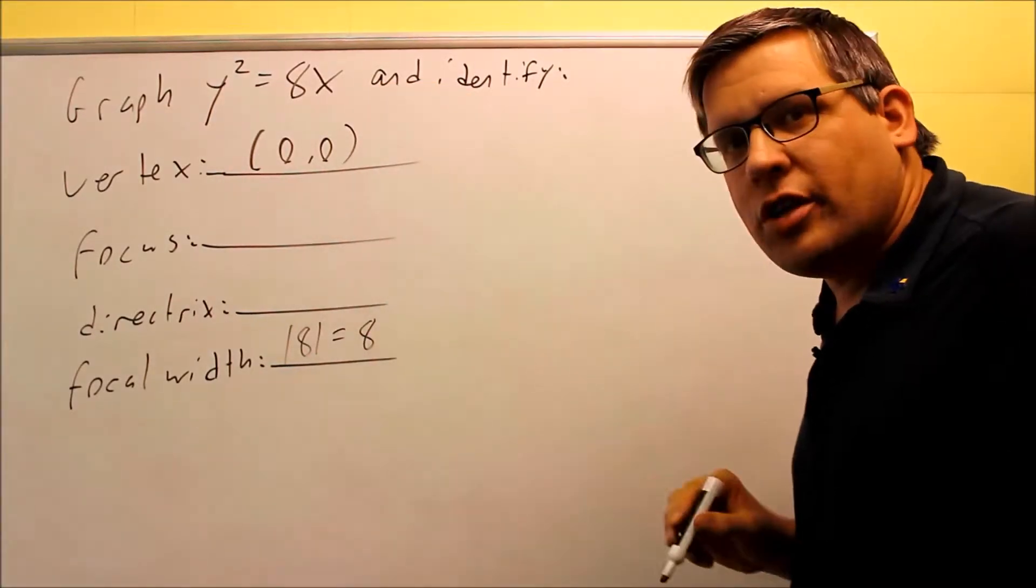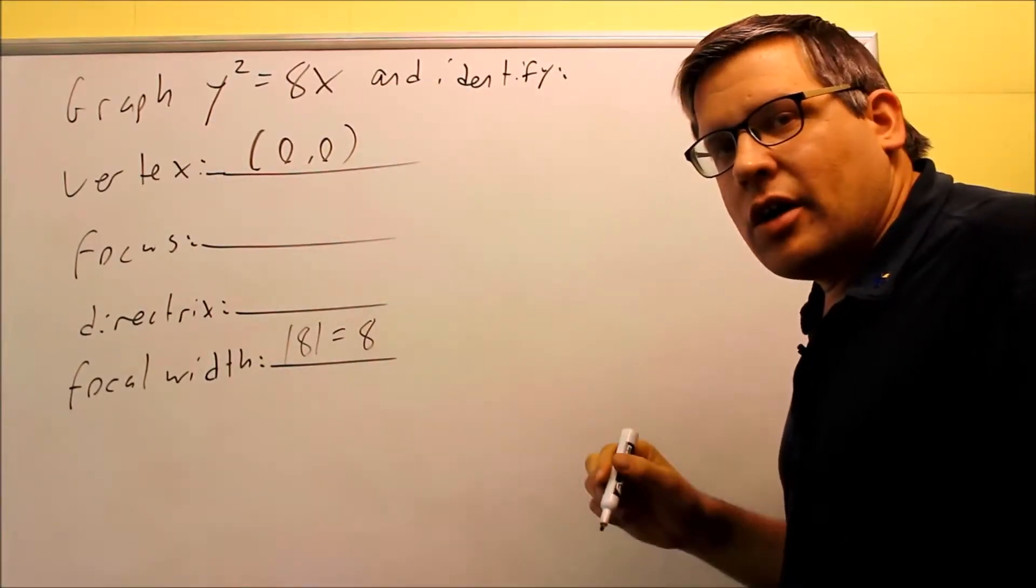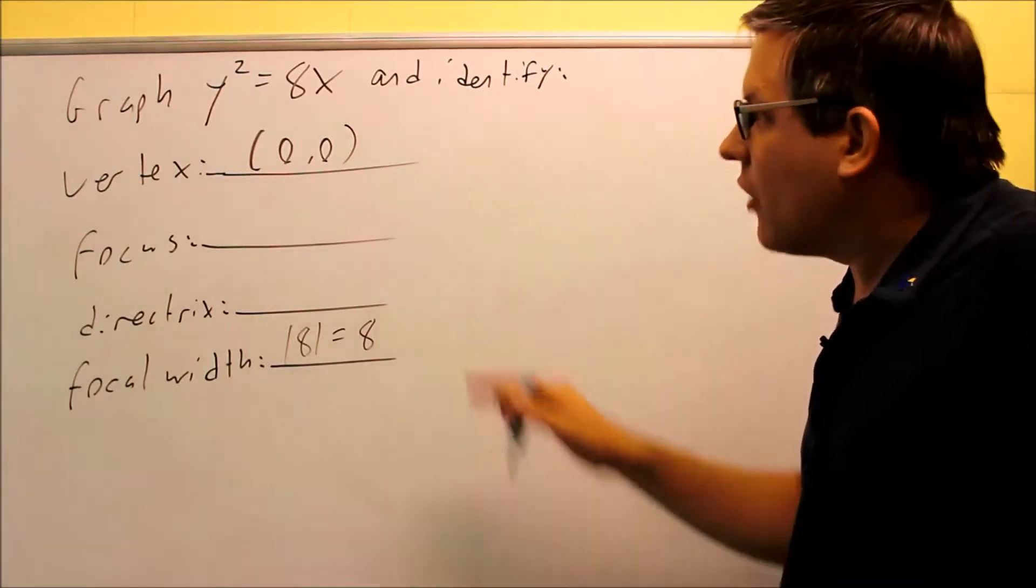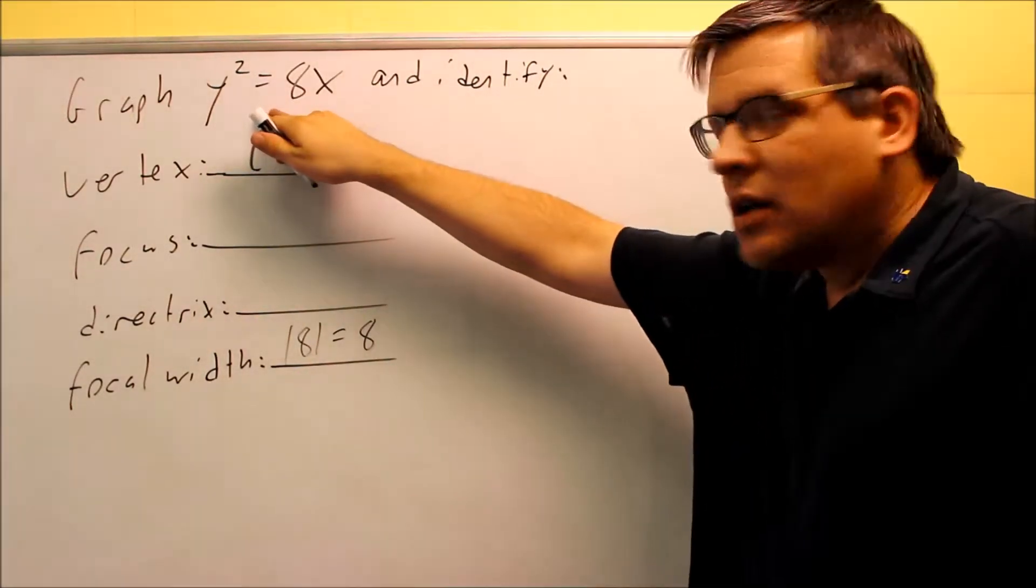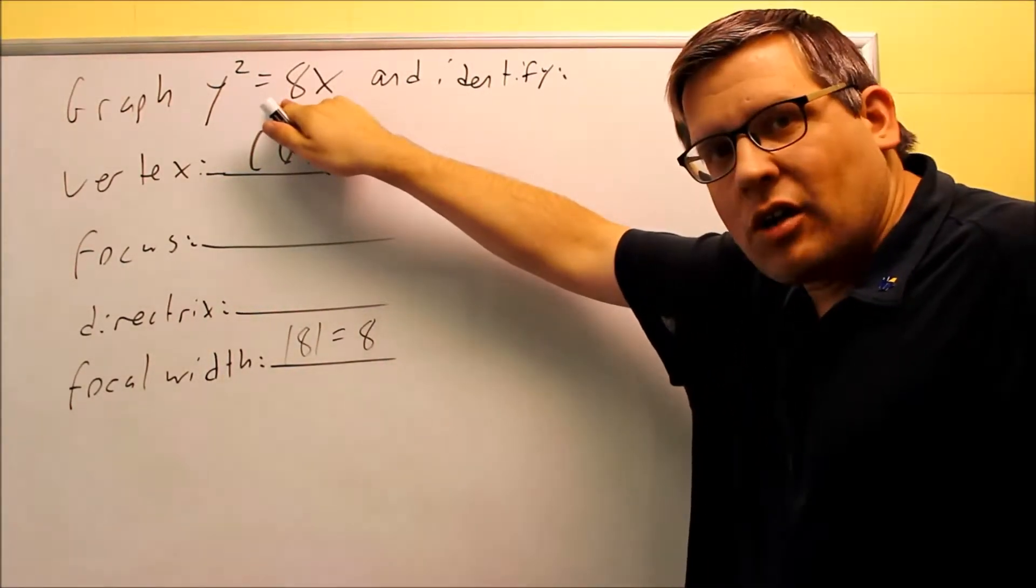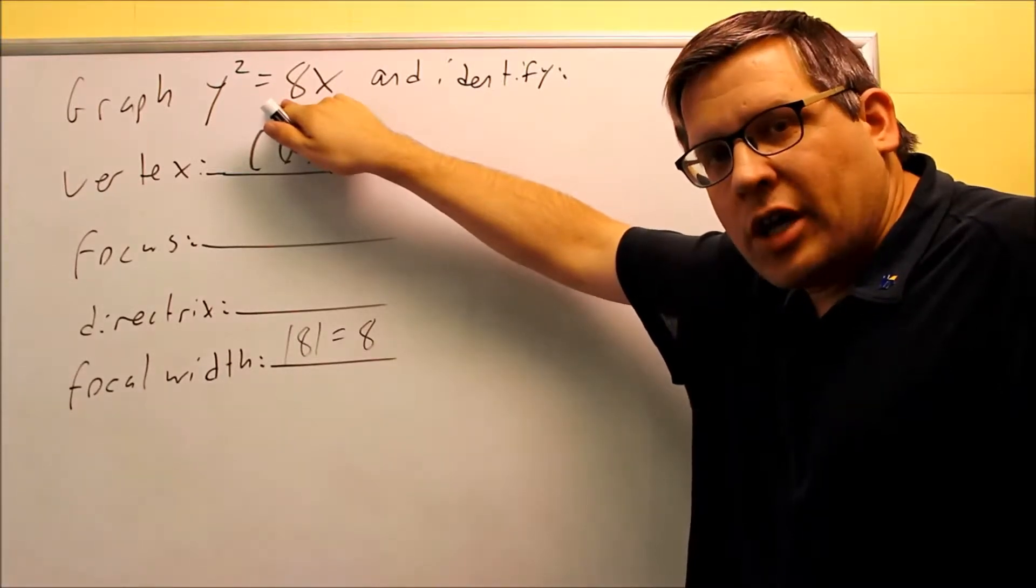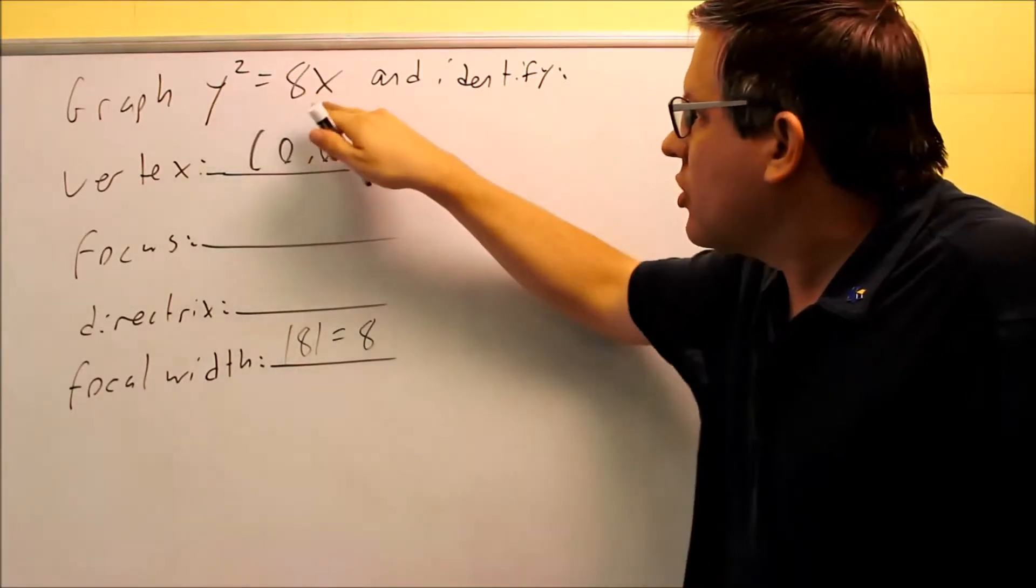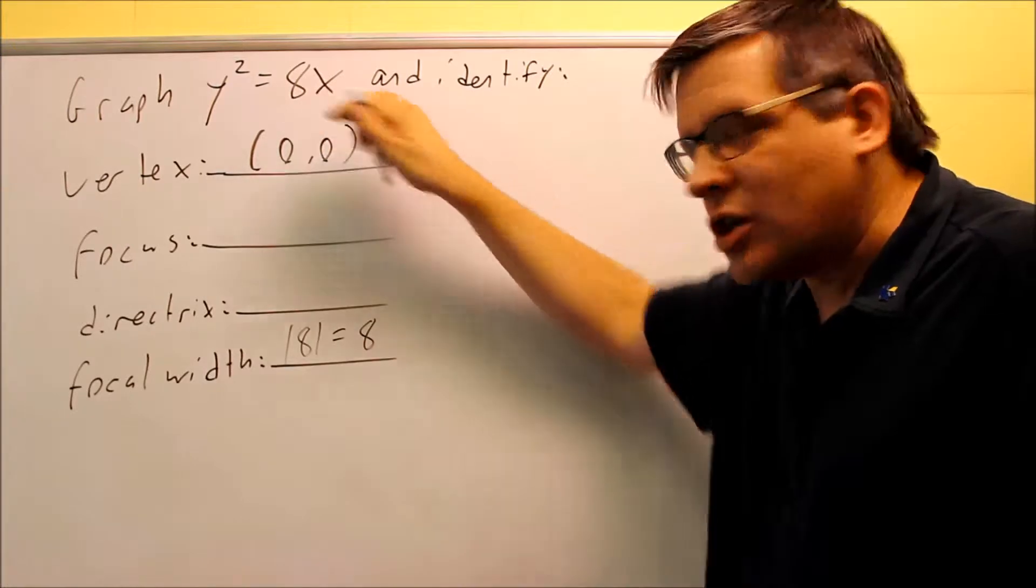Once we have this information complete, now we're ready to draw the graph. In order to draw the graph, we have to look at our four models and look at this equation, and that's going to tell us whether the graph opens up, down, left, or right. We look at all the equations, and we see which one this most closely resembles.